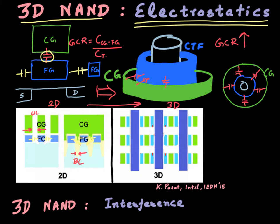This gate coupling ratio increases substantially as you move from 2D to 3D NAND flash. If you increase your gate coupling ratio, you can essentially reduce the voltage required to program the cell. The other big problem that led the industry to seriously consider 3D NAND flash was the electrostatic interference, or cell-to-cell coupling, which becomes worse in 2D NAND flash memory.